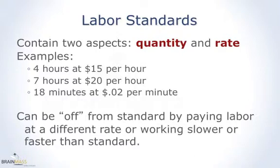Labor standards contain two components: the quantity and the rate. The quantity is how long it's going to take, and the rate is at what price do we think you're going to pay for labor. You can get a variance from standard by either working at a different rate — too slow or faster than standard — or by paying at a different rate, paying more or less per hour.